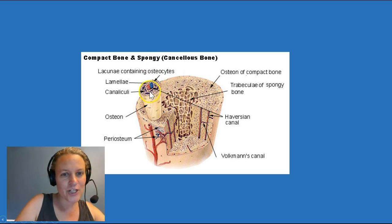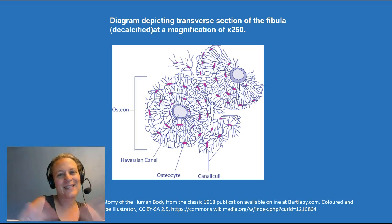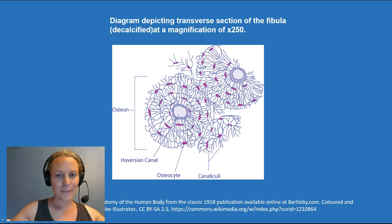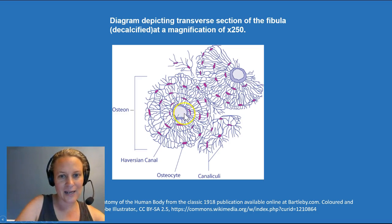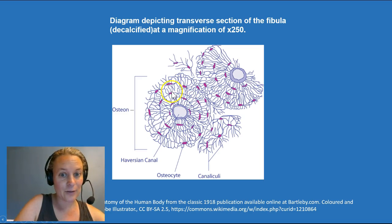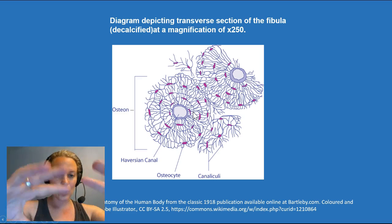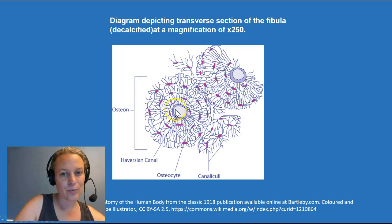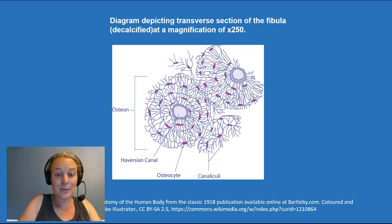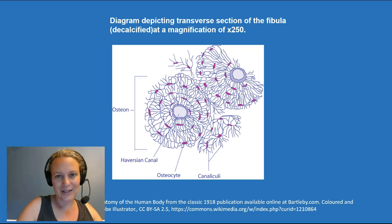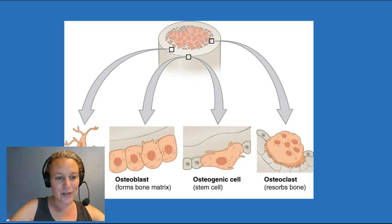It turns out there are little channels that connect this middle canal to all the different cells throughout. This next picture is really cool — it's a diagram depicting what would happen if we removed all the structural components and were just looking at the middle canal where the blood vessels run through. These are called canaliculi, and they connect the canal to each of the cells. You can see this intense network connecting the cells to each other and to the blood and nerve supply. This is bone tissue — all of these cells are talking to each other all the time.